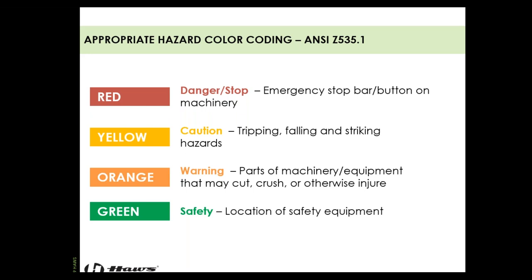Per ANSI Z535.1, hazard color coding: red is danger/stop; yellow is caution for tripping, falling, and striking hazards; orange indicates machinery parts that can cut, crush, or injure. And green — the color of emergency equipment — is the designated color for the location of safety equipment. Green is first aid. Green is safety. Green means go.